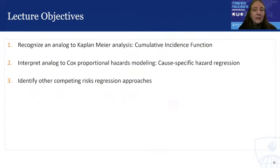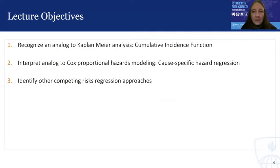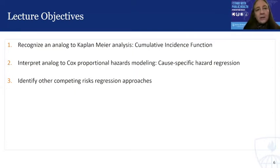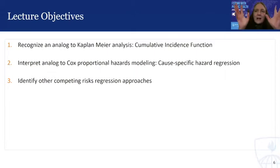Here are our lecture objectives for this brief module. First, I want you to be able to recognize an analog to Kaplan-Meier analysis appropriate in the competing risk setting — that is, to estimate the cumulative incidence function, but defined differently than in the standard survival setting. Second, to be able to interpret an analog to the Cox proportional hazards model, which is a cause-specific hazard regression. And finally, at a very high level, to identify a few other competing risks regression approaches beyond cause-specific hazard modeling.